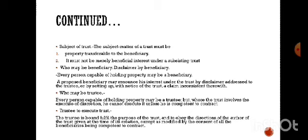Who may be a trustee: every person capable of holding property may be a trustee, but where the trust involves the exercise of discretion, he cannot execute it unless he is competent to contract — meaning he must be of sound mind and have reached the age of majority (18 years under the Indian Majority Act), and be competent to contract under Section 10 of the Indian Contract Act. A trustee is bound to fulfill the purpose of the trust and obey the directions of the settlor given at the time of creation, except as modified by the consent of all competent beneficiaries.